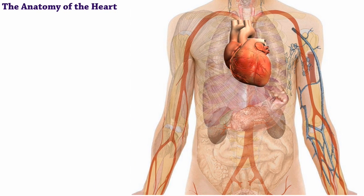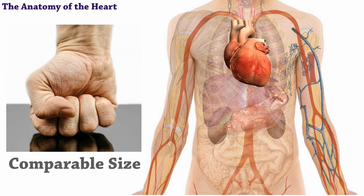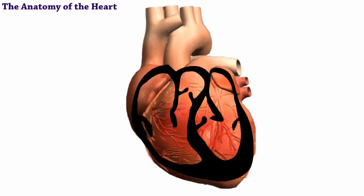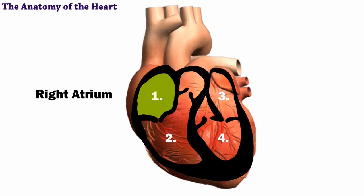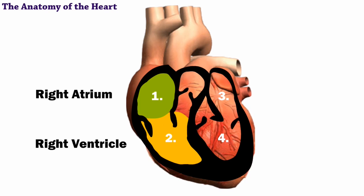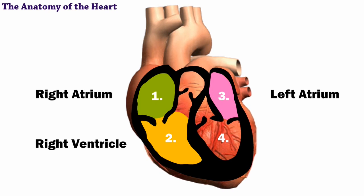A normal, healthy adult heart is about the same size as a clenched fist. Every heart has four chambers. These are the right atrium, the right ventricle, and the left atrium.